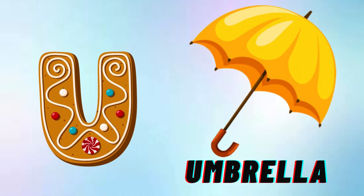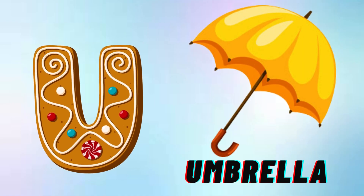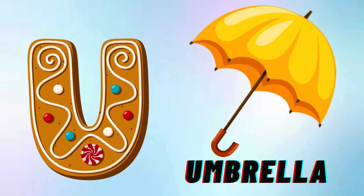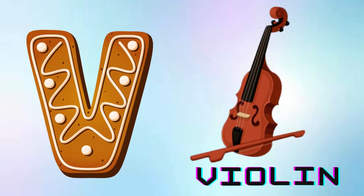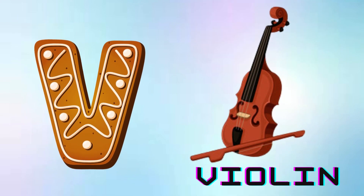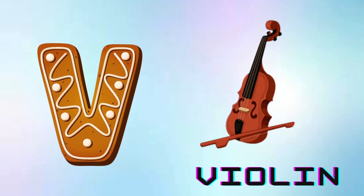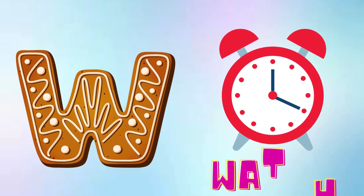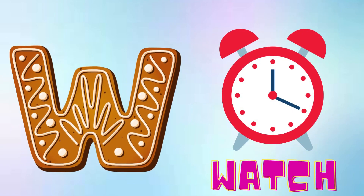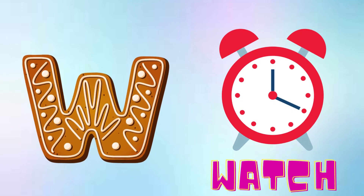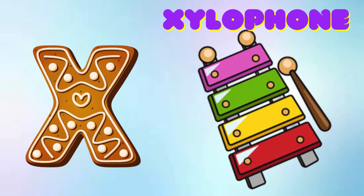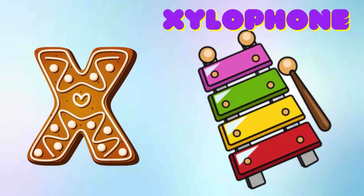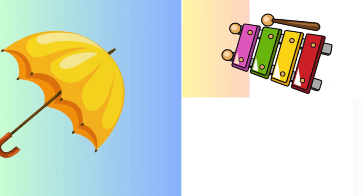U is for Umbrella, U-U-Umbrella. V is for Violin, V-V-Violin. W is for Watch, W-W-Watch. X is for Xylophone, X-X-Xylophone.